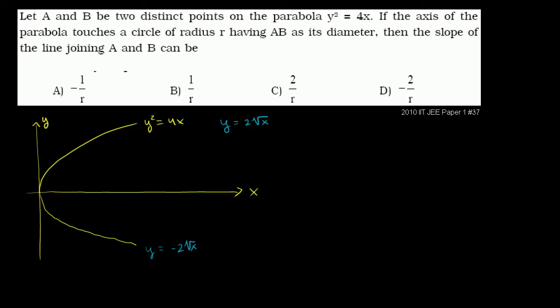They tell us that if the axis of the parabola, that's essentially the x-axis, touches a circle of radius r having AB as its diameter. Let's take two points on this parabola. Let's say that is point A, and let's say that this is point B. It is the diameter for some circle that just touches this axis.